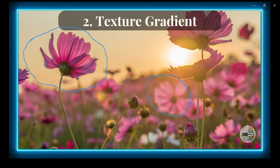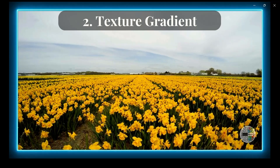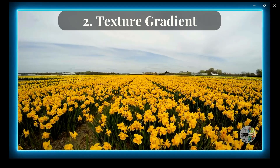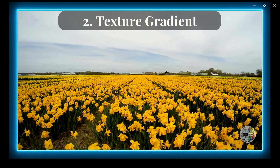Number 2: Texture Gradient. This cue measures the change in texture or degree of gradient. Take a field of flowers — things that are far away seem less detailed and blurry, while as they get closer, they become clearer and more detailed. You can find a relatable example in your phone's image gallery — pull up your photos and see for yourself.